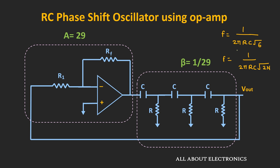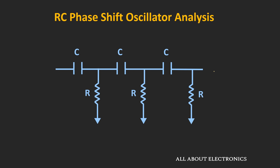Some of you might be wondering how we get the frequency expression and why the attenuation of the RC stage is 1/29. Let's derive these two expressions. The same RC stages are drawn separately. We assume Vin is the input to the RC stage and Vout is the output. Using mesh analysis or nodal analysis, we can find that Vout/Vin for this RC network equals −1/29. Let's quickly derive this relationship.